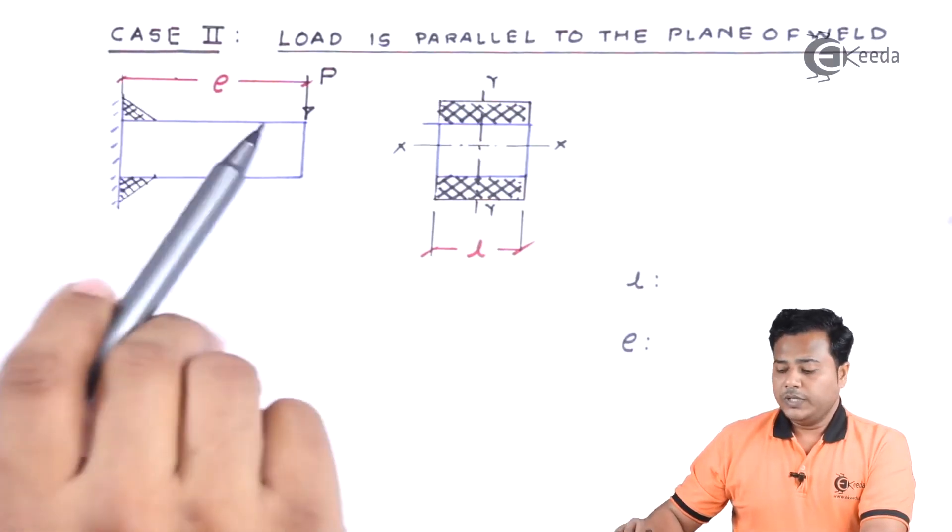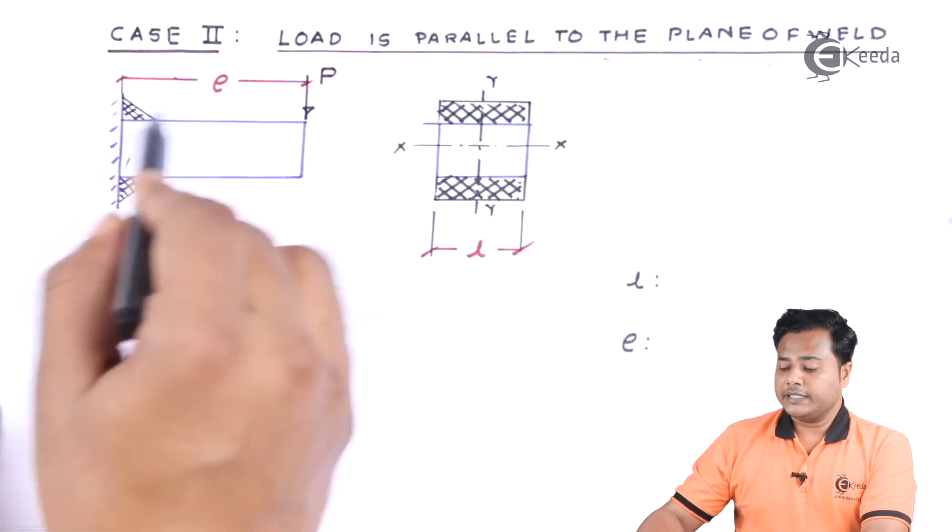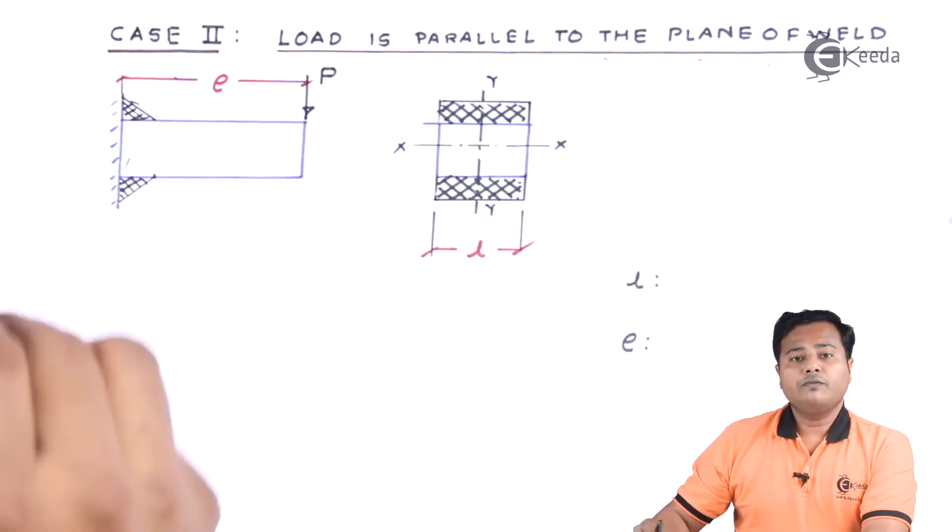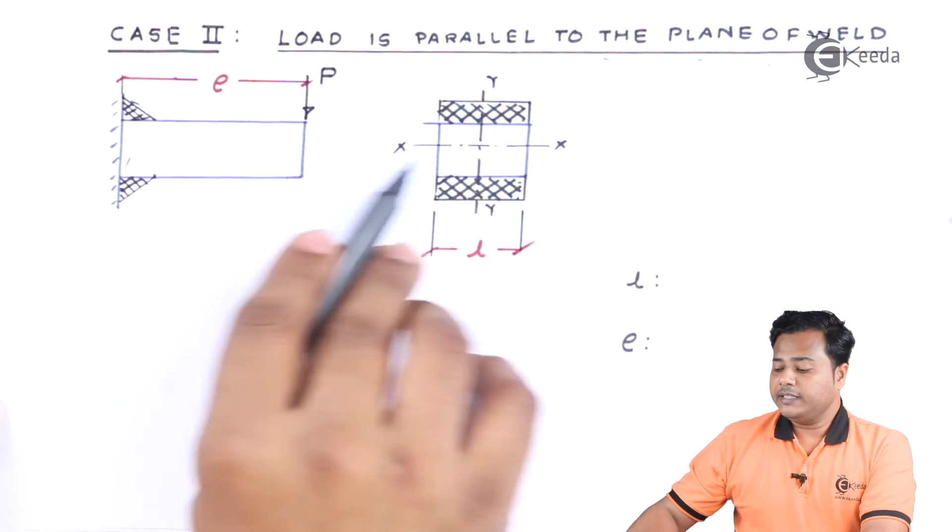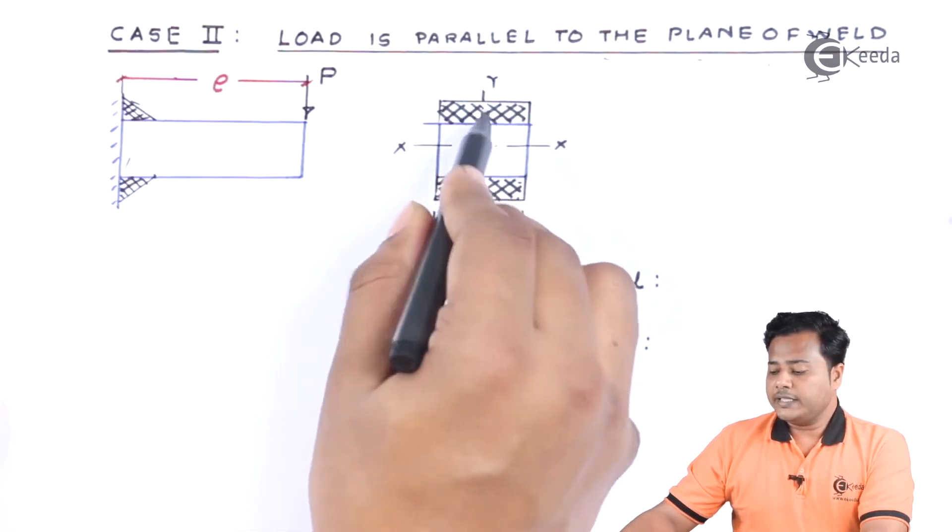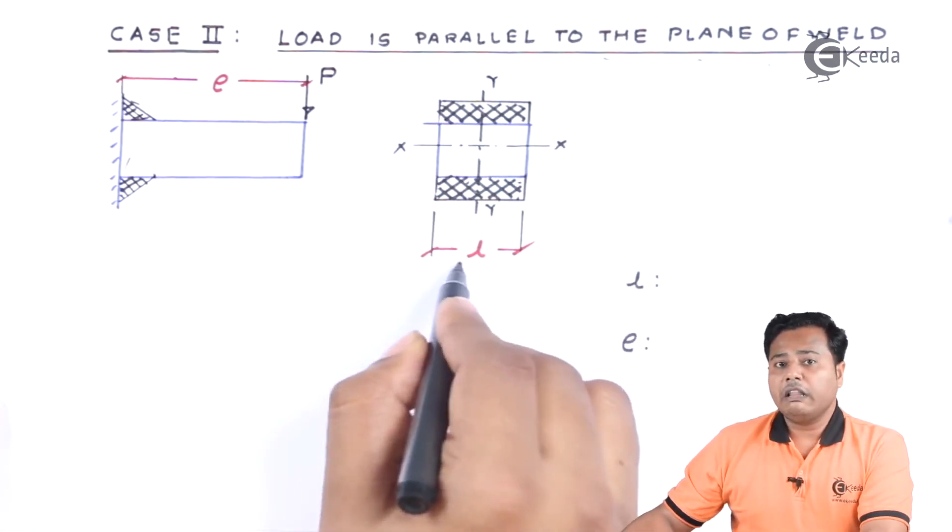In case number 2, the load is parallel to the plane of weld. This is how your case is. This is how the welding is done and in the same plane your force is acting. Of course there is some eccentricity and this is what the side view of the section is. So XX axis and Y axis. Now there are some important parameters. This is the length of weld.